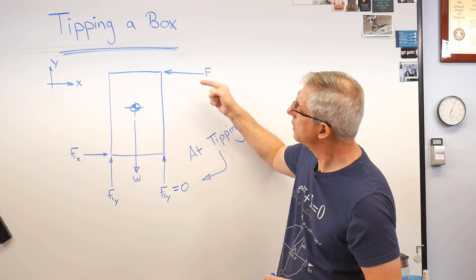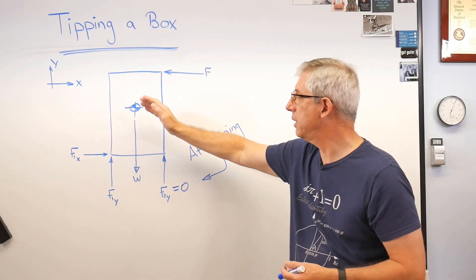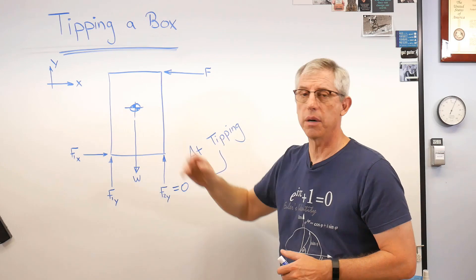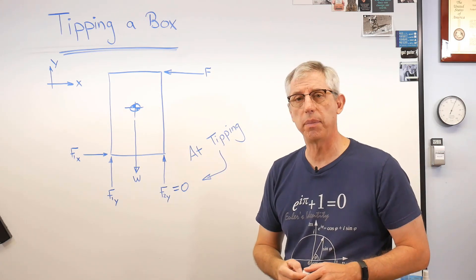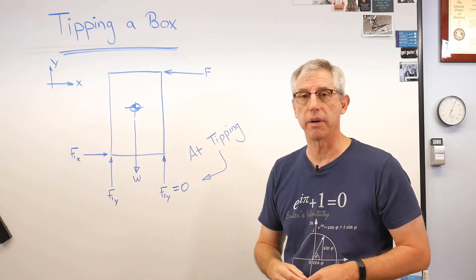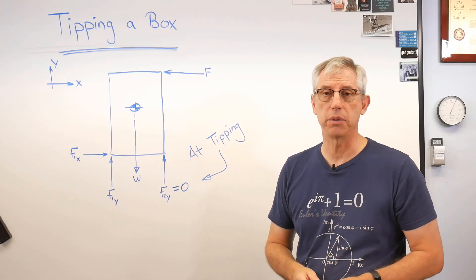So if I were to take this box and push it and let go, if I didn't push it too far, it would come back to vertical, wouldn't it? So what happens when the box is tipping over? This free body diagram doesn't explain what's happening when a box tips over.